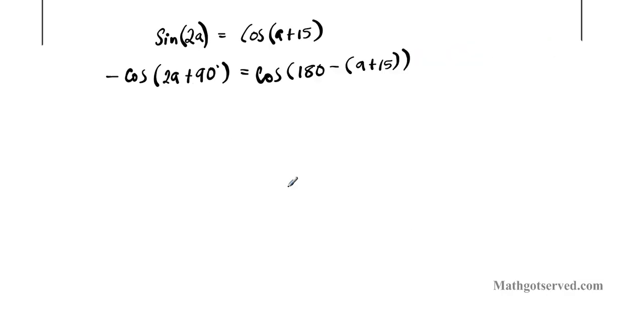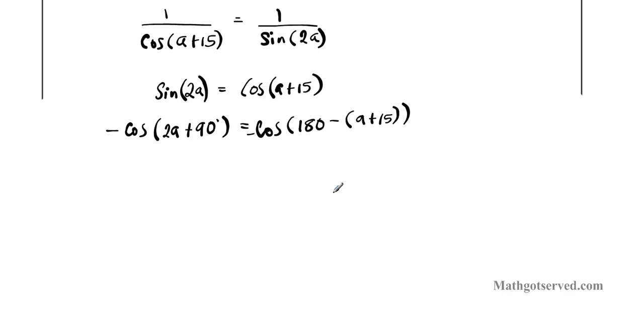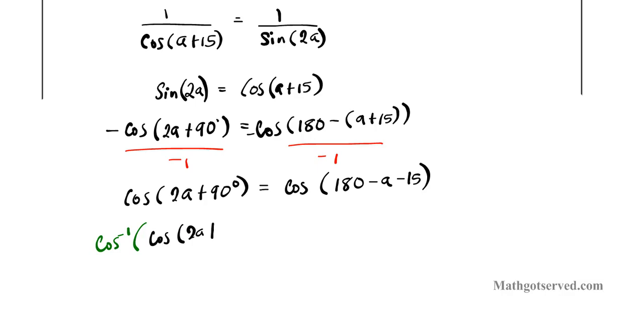Actually I left out the minus. Because you see there's a minus there so I need to have a minus here too. Alright, so what we're going to do next is let's get rid of the negatives. So to do that it's not hard. We divide both sides by negative 1. Divide both sides by negative 1. So we're going to have cosine 2a plus 90 degrees equals cosine. Why don't we simplify this while we're at it. 180 minus a minus 15. Alright, now we'll just take the inverse cosine of both sides. We're going to simplify this a little bit more. 180 minus 15 is, take out 10. It's 165 minus a.